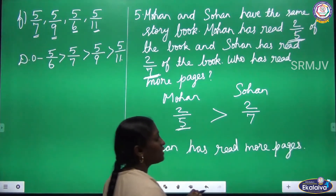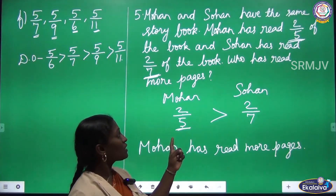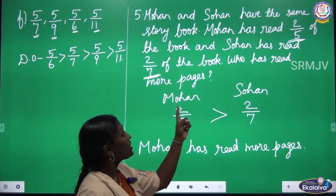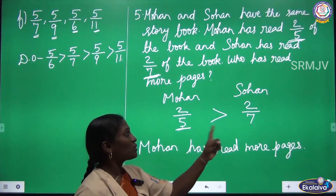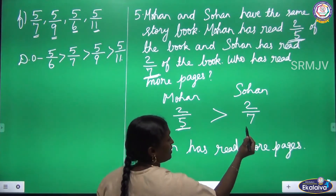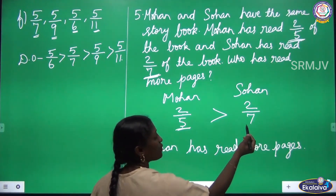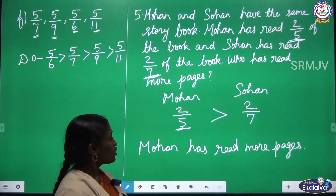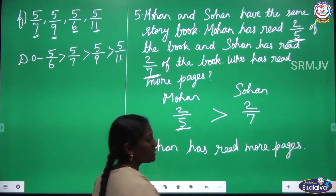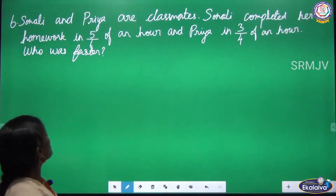Is it clear, children? When the given unlike fractions have the same numerator, we compare the denominators. The fraction which has the greater denominator is smaller. So Mohan has read more pages. Is it clear?